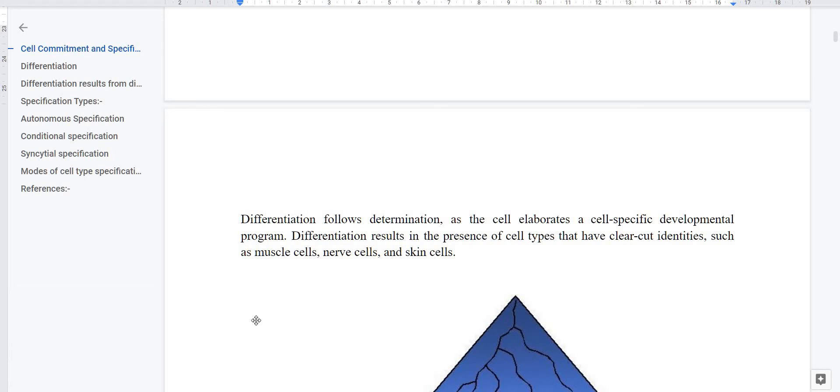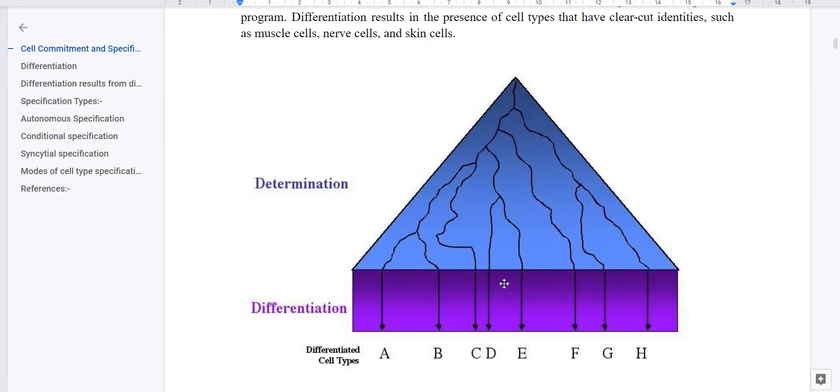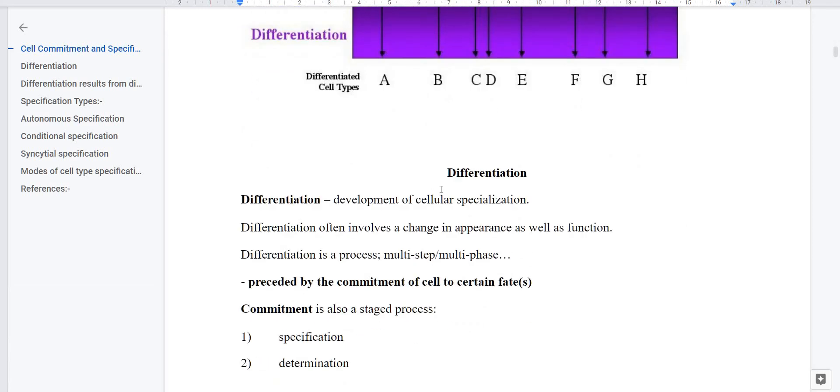By the way, every cell receives a particular identity. After that, there will be differentiation. And in differentiation, every cell receives an identity, whether it will become a blood cell, a nerve cell, or a muscle cell. Now what is differentiation? In differentiation, there will be an identity. In the cell, new structures appear. The cell can perform new functions. So what is differentiation? It is a process, a multi-step process. And what is differentiation? Commitment and determination.